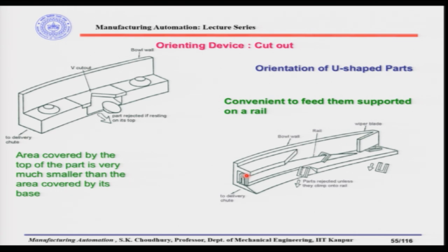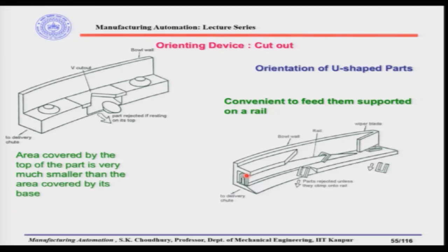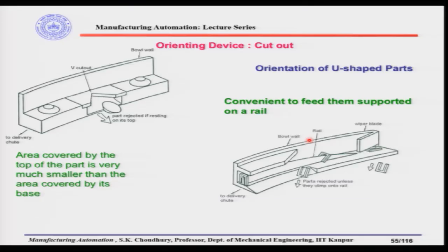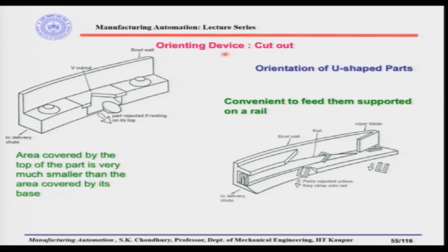Through these examples what I am trying to show is that orienting devices can be designed depending on the part — these are only some samples, and parts can be very different. If an engineer or specialist working in the industry has enough experience with these kinds of orienting devices, then when a new part comes with a different shape, you can design an orienting device based on the type, shape, and size of the parts. This is not very difficult, and I will show you some other examples of orienting devices as well, depending on the type and shape of the parts. Thank you.